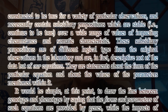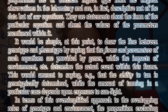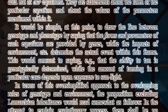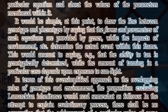They are statements about the form of the particular equation and about the values of the parameters mentioned within it. It would be simple, at this point, to draw the line between genotype and phenotype by saying that the forms and parameters of such equations are provided by the genes, while the impacts of the environment determine the actual event within this frame. This would amount to saying, e.g., that the ability to tan is genotypically determined, while the amount of tanning in a particular case depends upon exposure to sunlight.